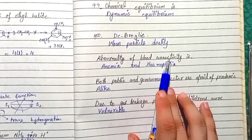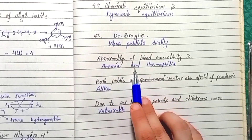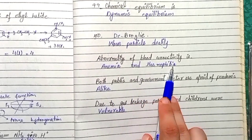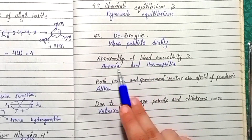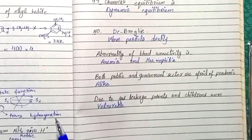Question 4 (additional): Abnormalities of blood connectivity include anemia and hemophilia — in both diseases, blood connectivity is abnormal.